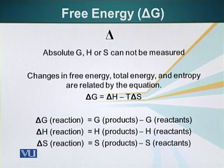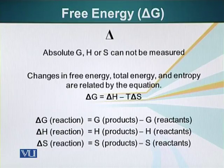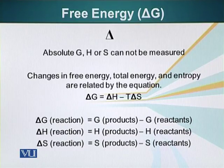If we look at this equation carefully, we reach some conclusions. If delta G is negative, it means that when the reaction occurs, energy will be released from the system. If delta G is a positive number, then we have to add that much energy to the system in order for the process or chemical reaction to continue.